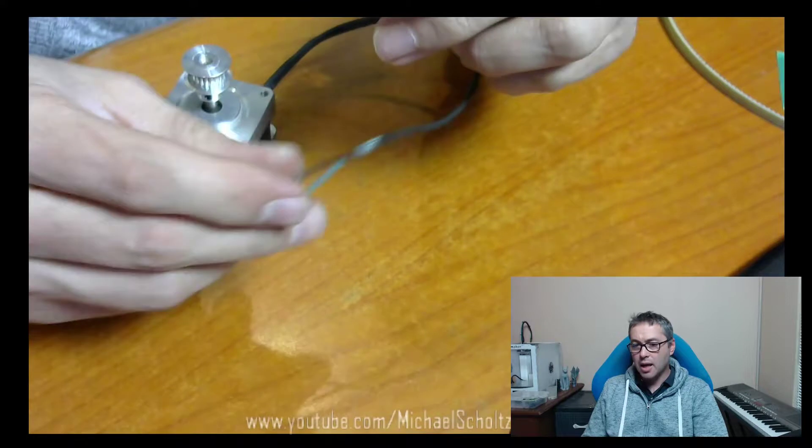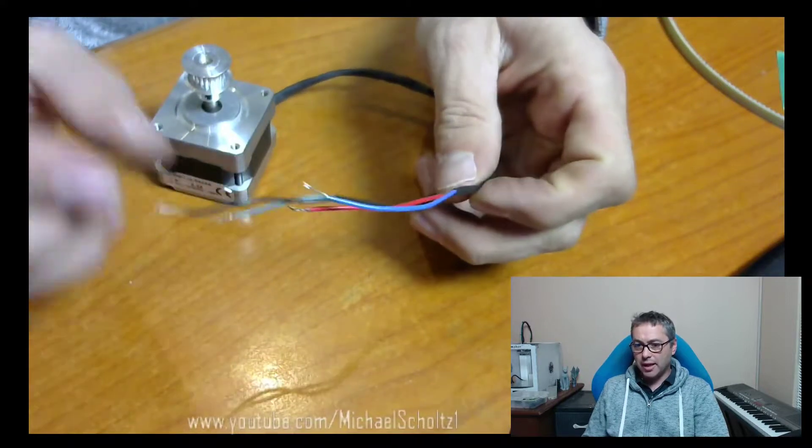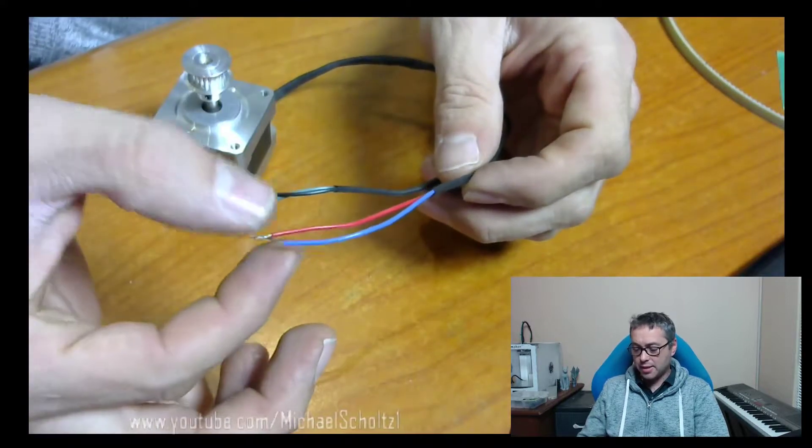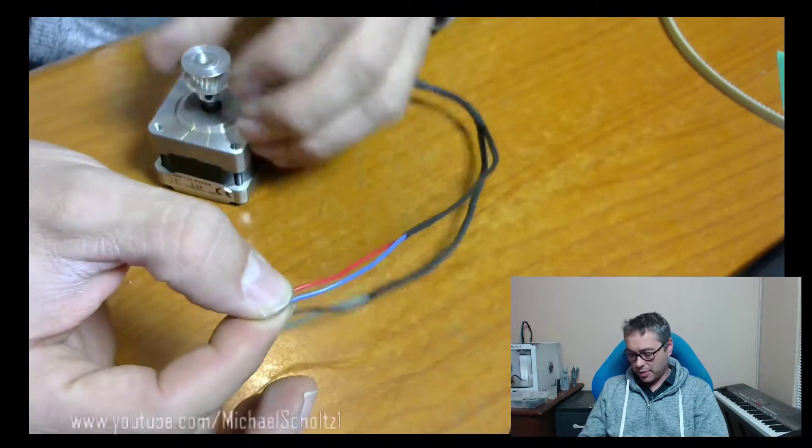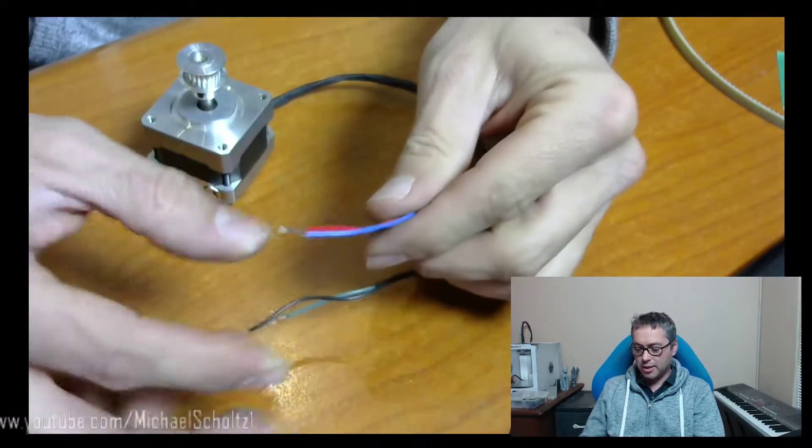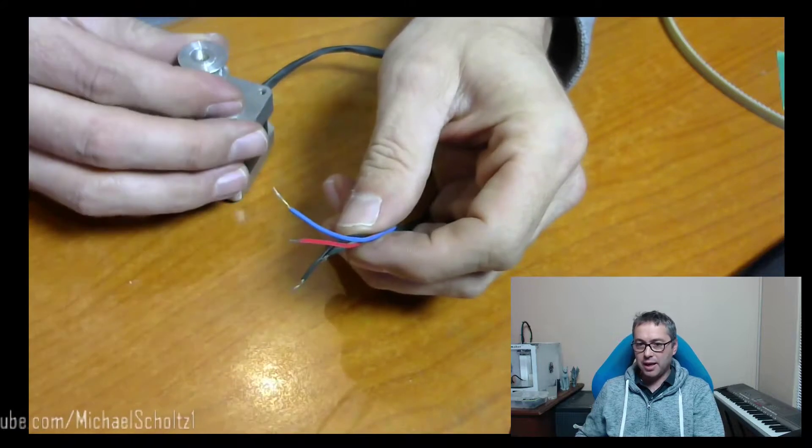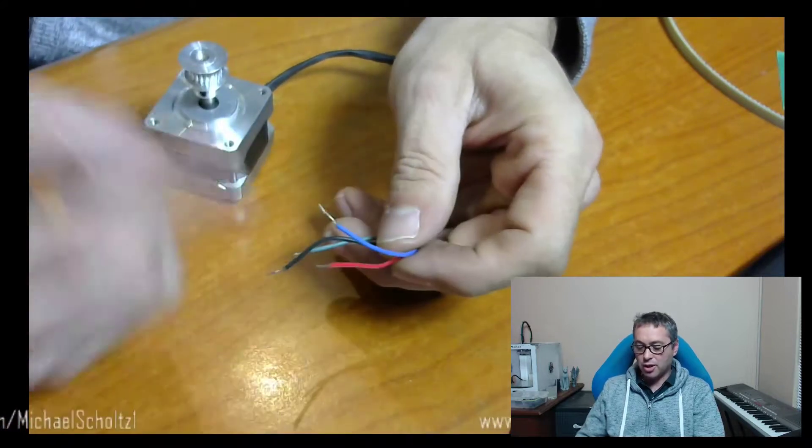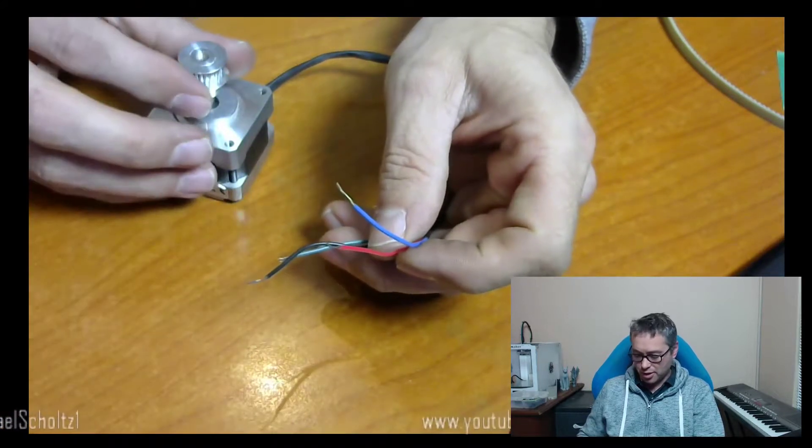Now how these coils work is two coil pairs. When you energize one coil pair it turns one rotation. Energize the other pair, it turns one further rotation. Energize them in reverse, it turns in the opposite direction.